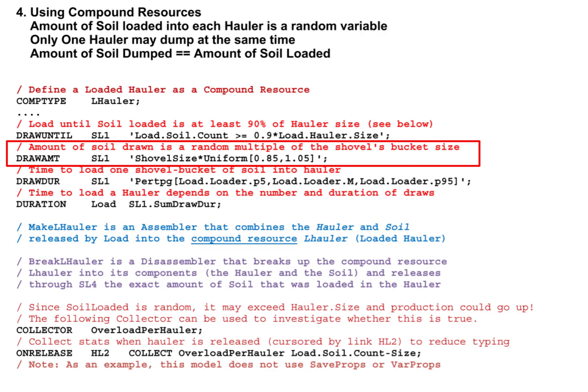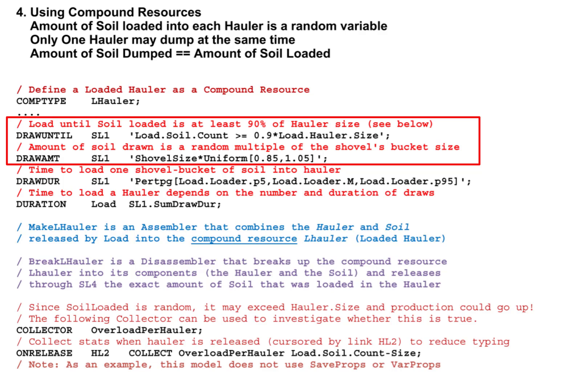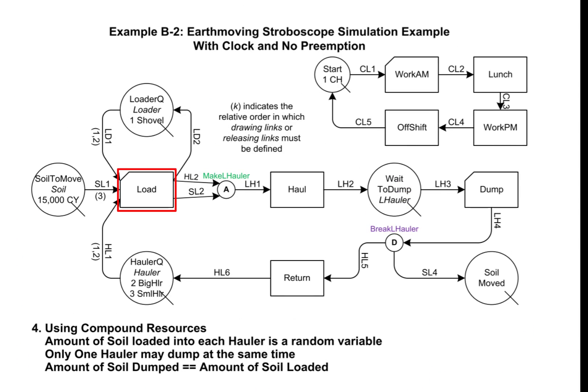The draw amount statement allows SL1 to draw a probabilistic amount of soil from the preceding queue. In this case, the amount of soil drawn equals shovel size times a uniformly distributed random number between 85% and 105%. The draw until statement allows link SL1 to draw soil until the amount drawn exceeds 90% of the capacity or size of the hauler in load. The draw until and draw amount for link SL1 work together to allow an instance of load to draw a random amount of soil from link soil to move. This exact amount of soil will then flow through link SL2 and be assembled together with the hauler into the compound resource L hauler.